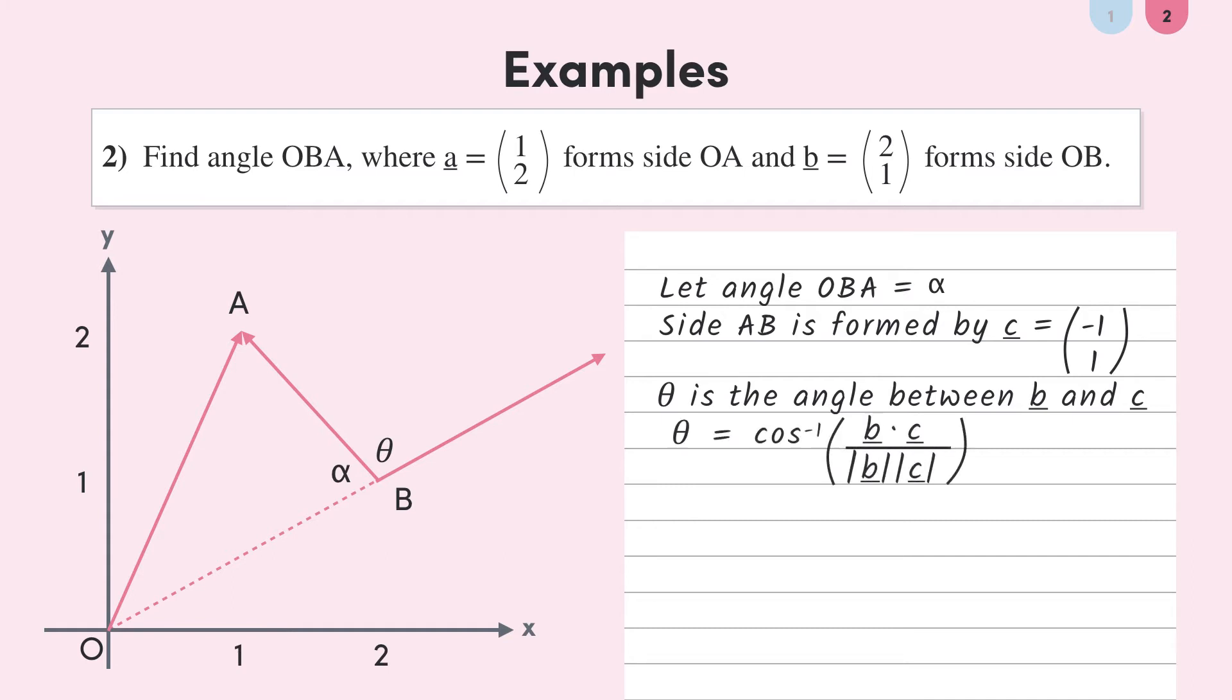So let's use our formula to find the angle between vectors b and c. Here is the dot product and the magnitudes of the vectors. You can double check them yourself for practice. Plugging this into a calculator, you will get a value of around 108.4 degrees. And so, to actually answer the question, given that angles on a straight line add up to 180 degrees, angle OBA is equal to 180 minus 108.4, which is 71.6 degrees.